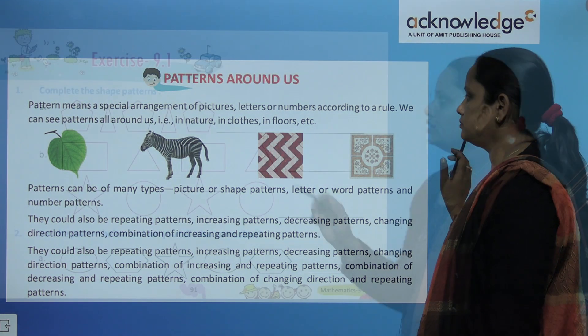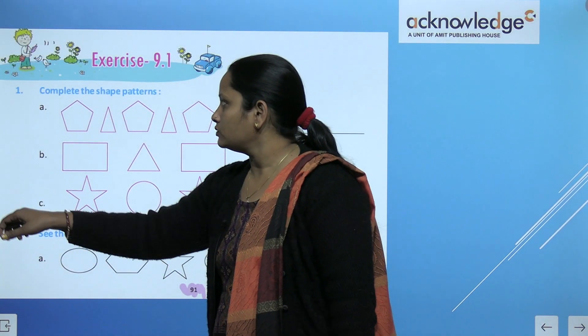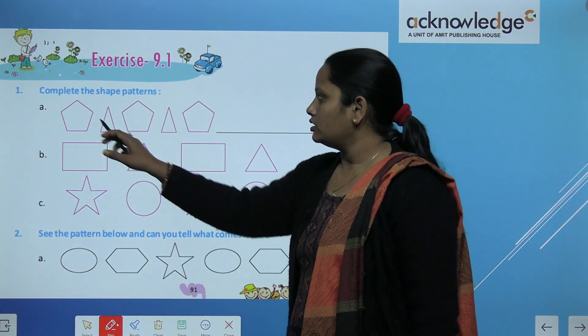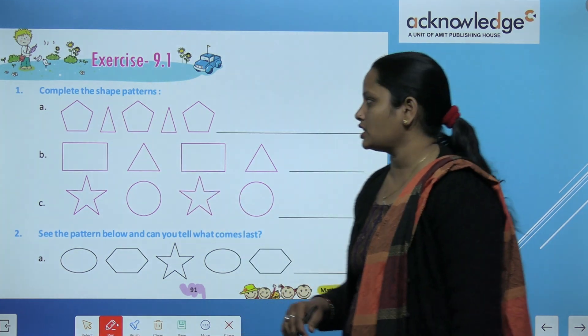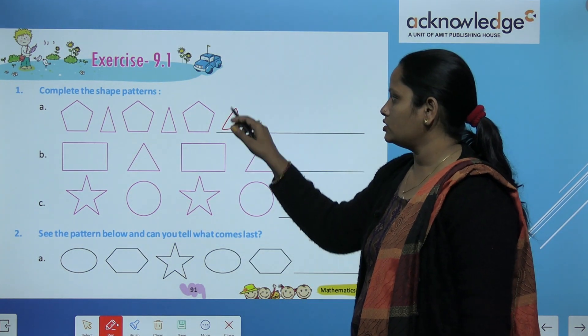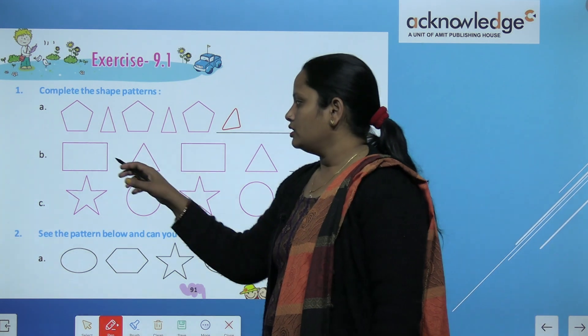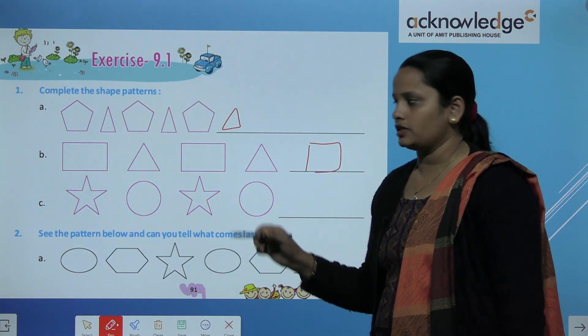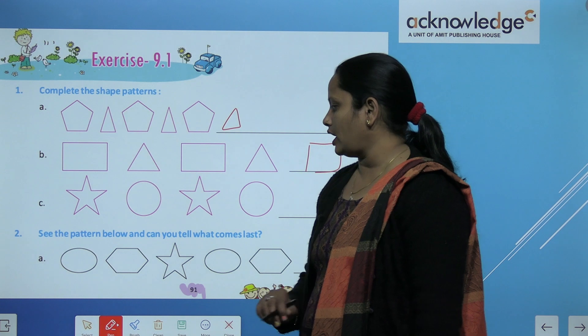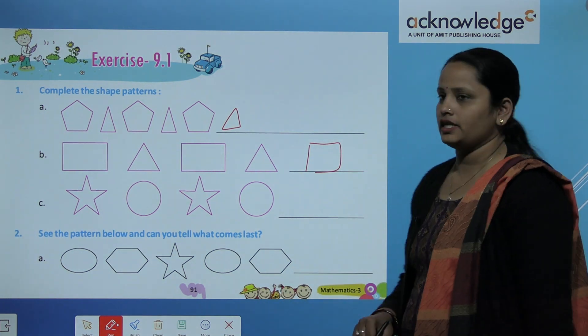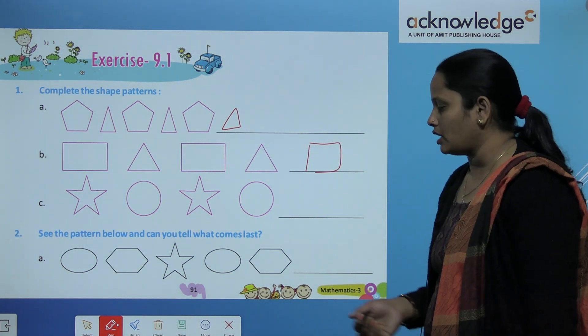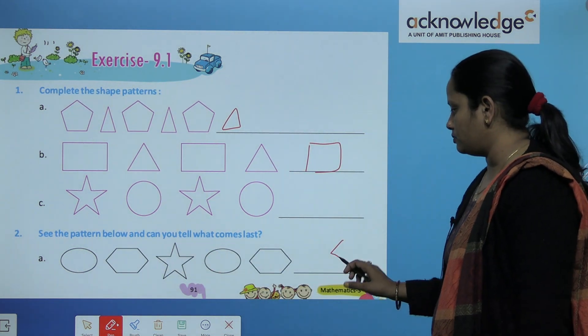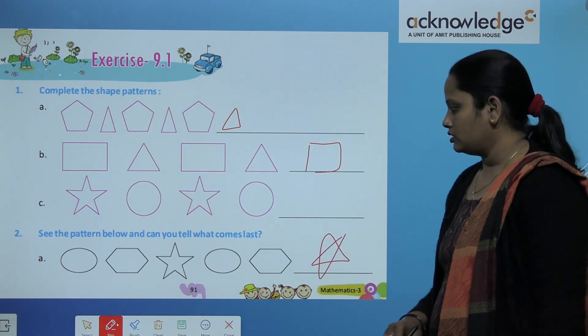So let's do this exercise 9.1. We have to complete the given shapes. So this is this shape. Now the next shape. You can say the shapes are changing. So the next will be the triangle. Let's see the pattern. This rectangle will come. Similarly you have to do the rest.